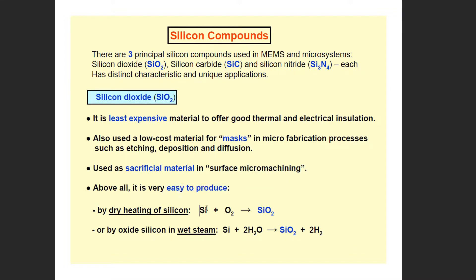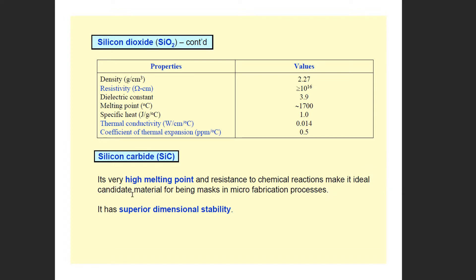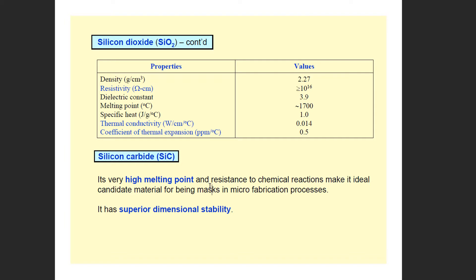Silicon dioxide is produced from silicon and oxygen. In its applications, it is used along with UCR. It has a very high melting point, and its resistance to chemical reactions makes it an ideal candidate material for use in microfabrication processes. We can also use silicon carbides, which have superior dimensional stability and are hard and complex.